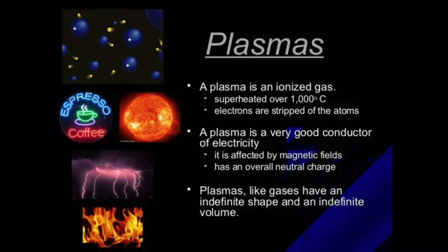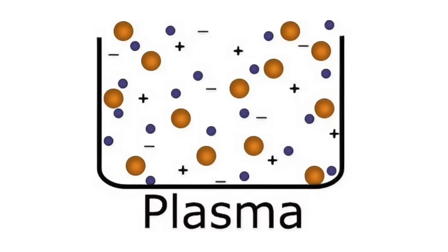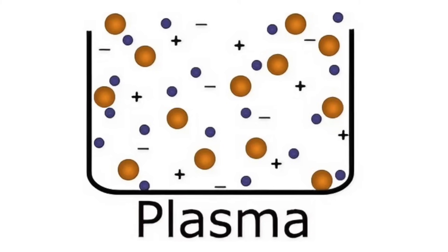So in case anyone is fuzzy on the subject, plasma is any substance that contains charged particles. Negatively charged electrons, positively charged ions, or dust particles that have an excess of either electrons or ions.